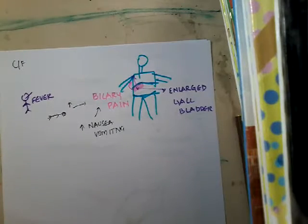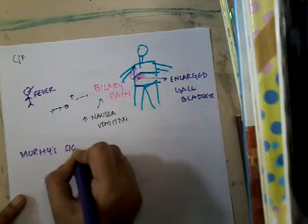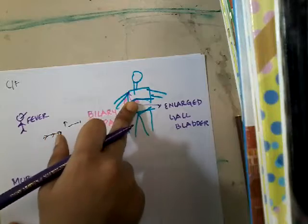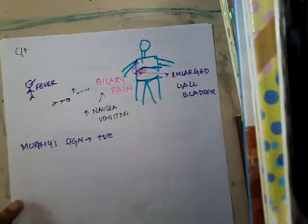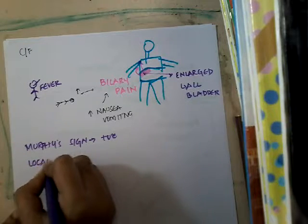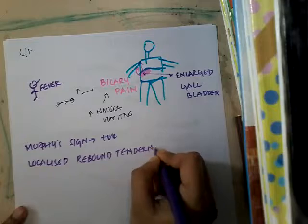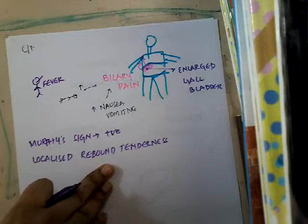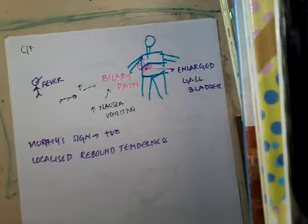The patient may have an enlarged and tender gallbladder. Murphy's sign is positive — palpation of the right upper quadrant causes pain. The patient may also have localized rebound tenderness: you compress the right upper quadrant and even after releasing the pressure, the patient still feels pain. That is rebound tenderness.